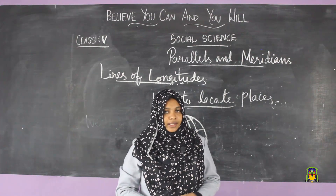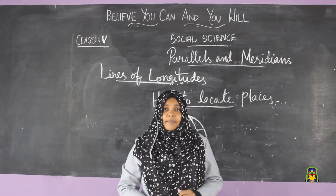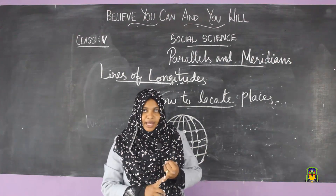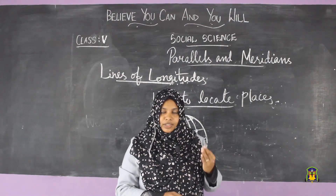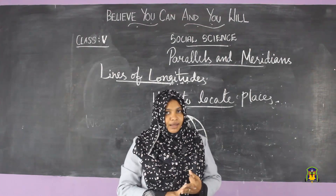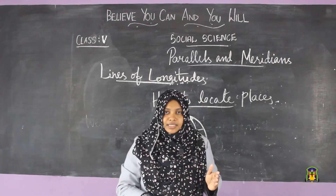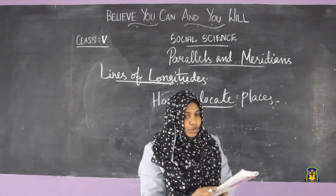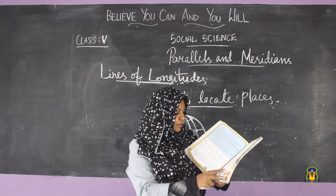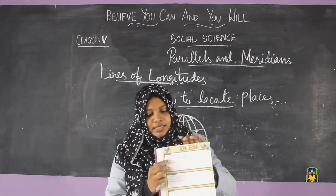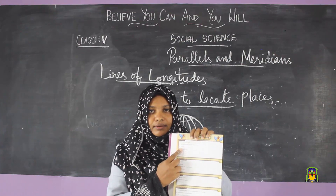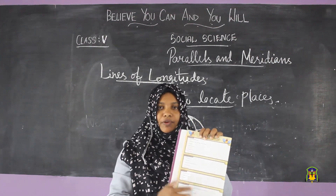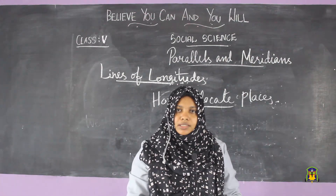Now let's check how to use an atlas. A book of maps is called an atlas. An atlas contains three types of maps: political maps, physical maps, and thematic maps. An atlas also has an index which helps us to find the location of a place — similar to how your textbook has an index with lesson number, lesson name, and page number. The atlas index page also helps us to locate places.